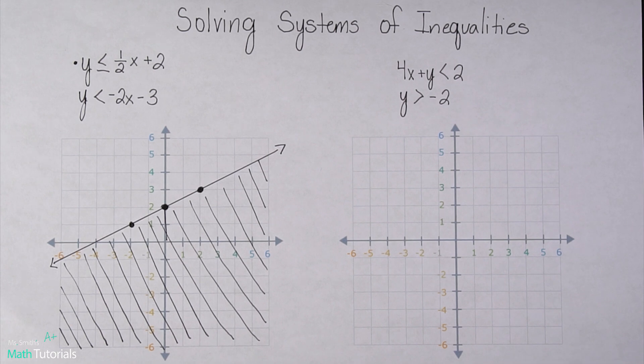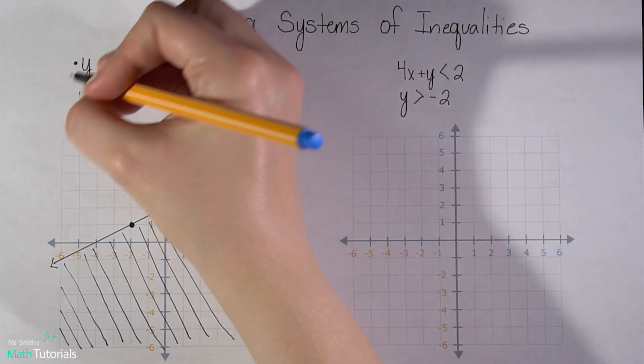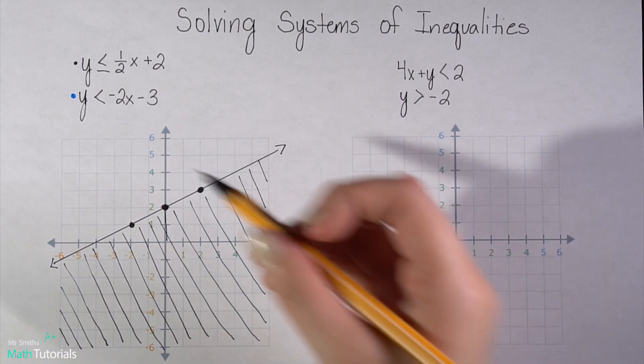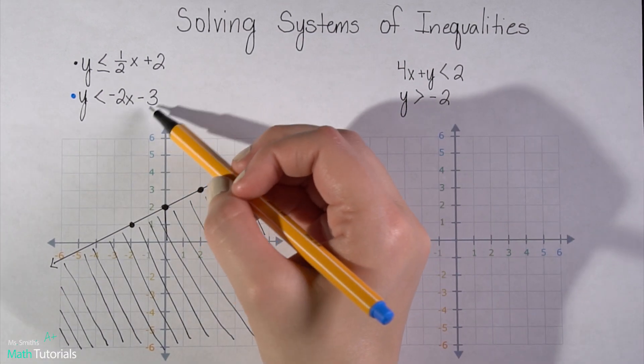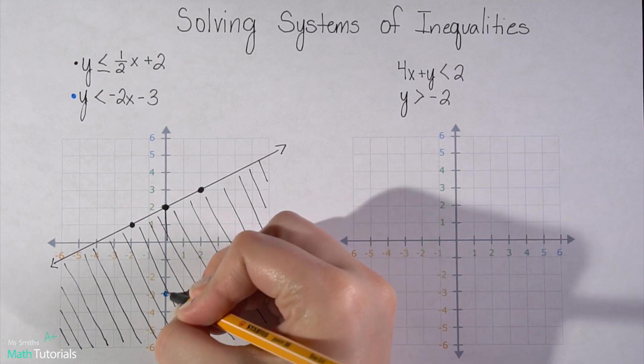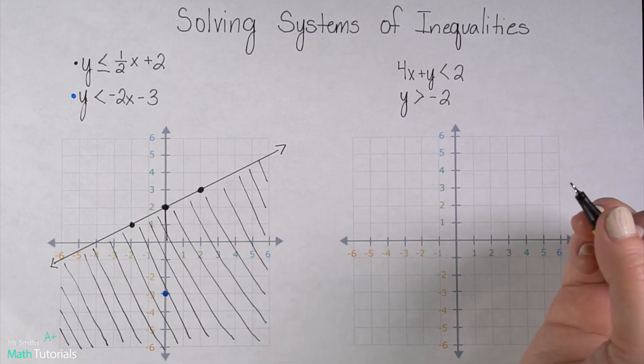I'm going to plot the second line in blue. Alright. So plotting the same way, I see that my y-intercept is at negative three. So I'm going to move down three from the origin. That's my first point.